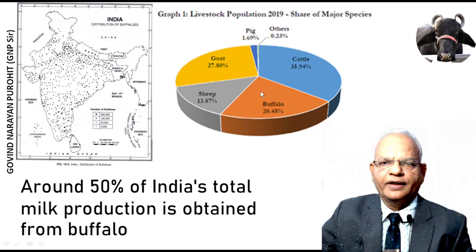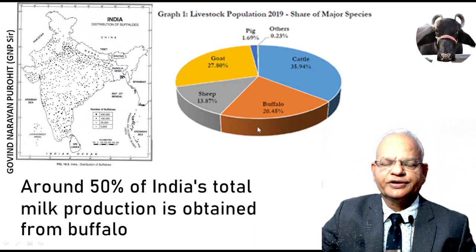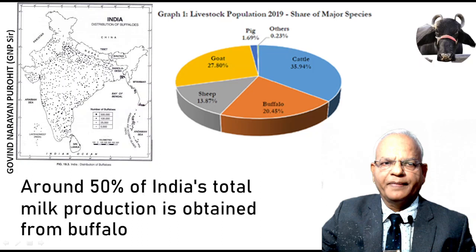This graph shows the population of buffalo in terms of overall livestock population in India. Buffalo constitute only 20.45% of the total livestock population but contribute 50% of India's total milk production. Buffaloes are spread all over the country, with maximum numbers in Uttar Pradesh, Rajasthan, Gujarat, and nearly all other states.